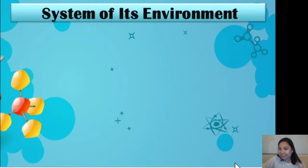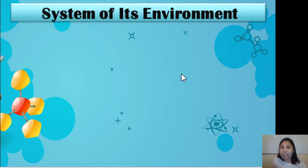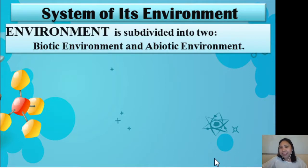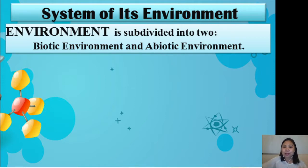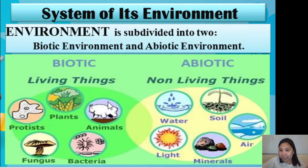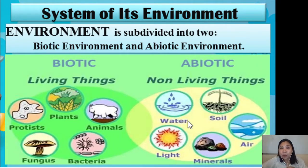This leads now to the second subsystem: the system of its environment. Notice that every concept I discuss is interconnected to each subsystem. Always remember that interconnectedness is a core concept in environmental science. The second system is the system of its environment. We already mentioned the two subdivisions of the environment: the biotic or living component, and the abiotic or non-living component. All organisms belonging to the biological kingdoms are part of the biotic environment, while all non-living things we interact with are part of the abiotic component.